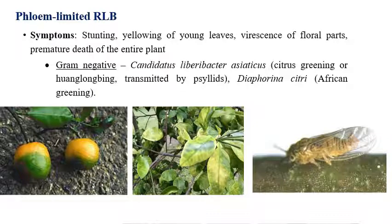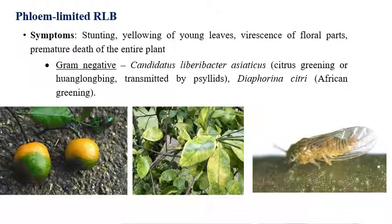For phloem-limited bacteria, the symptoms include yellowing of leaves, stunting, virescence of floral parts, and premature death of the plant. Yellowing is the most common symptom, and later the plant may die.